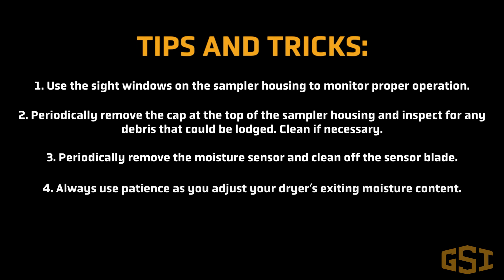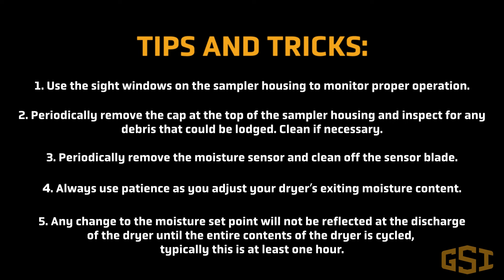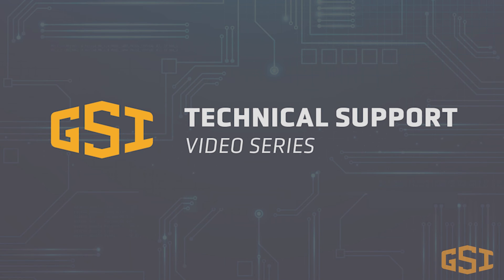Periodically remove the moisture sensor and clean off the sensor blade. Always use patience as you adjust your dryer's exiting moisture content. Any change to the moisture setpoint will not be reflected at the discharge of the dryer until the entire contents of the dryer is cycled — typically at least one hour.